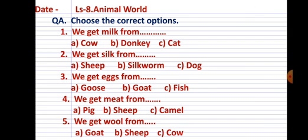Second: we get silk from... Options: a) sheep, b) silkworm, and c) dog. Third: we get eggs from... Options given are a) goose, b) goat, c) fish. Four: we get meat from... Options are a) pig, b) sheep, and c) camel. Number five: we get wool from... Options are a) goat, b) sheep, and c) cow.